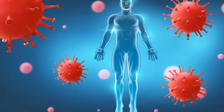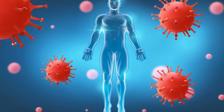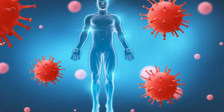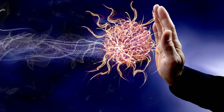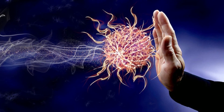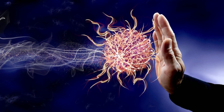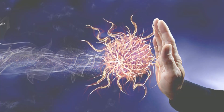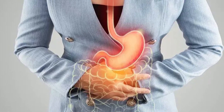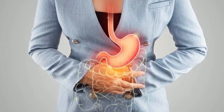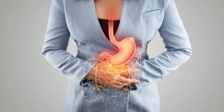Ulcerative colitis results from a mistake by the immune system. When you have ulcerative colitis, your immune system mistakenly believes that food, gut bacteria, and the cells that line your colon are intruders. Instead of protecting you, your white blood cells assault the lining of your colon, bringing on ulcers and inflammation.